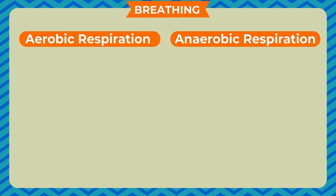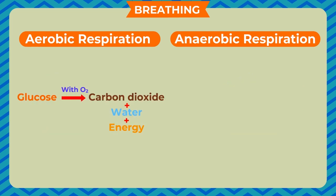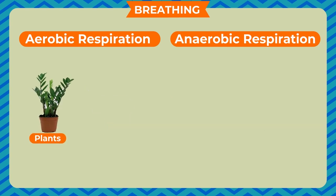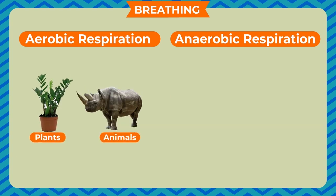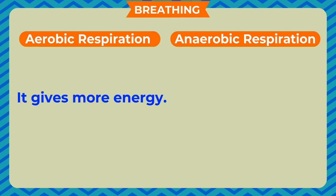Differences between aerobic and anaerobic respiration: Aerobic respiration takes place in the presence of oxygen, while anaerobic respiration takes place in the absence of oxygen. In aerobic respiration, glucose is completely oxidized to release carbon dioxide, water, and energy. In anaerobic respiration, glucose is partially broken down into ethyl alcohol, carbon dioxide, and energy. Aerobic respiration occurs in most plants and animals, while anaerobic occurs in few organisms like yeasts and bacteria. Aerobic respiration gives more energy; anaerobic gives less energy.